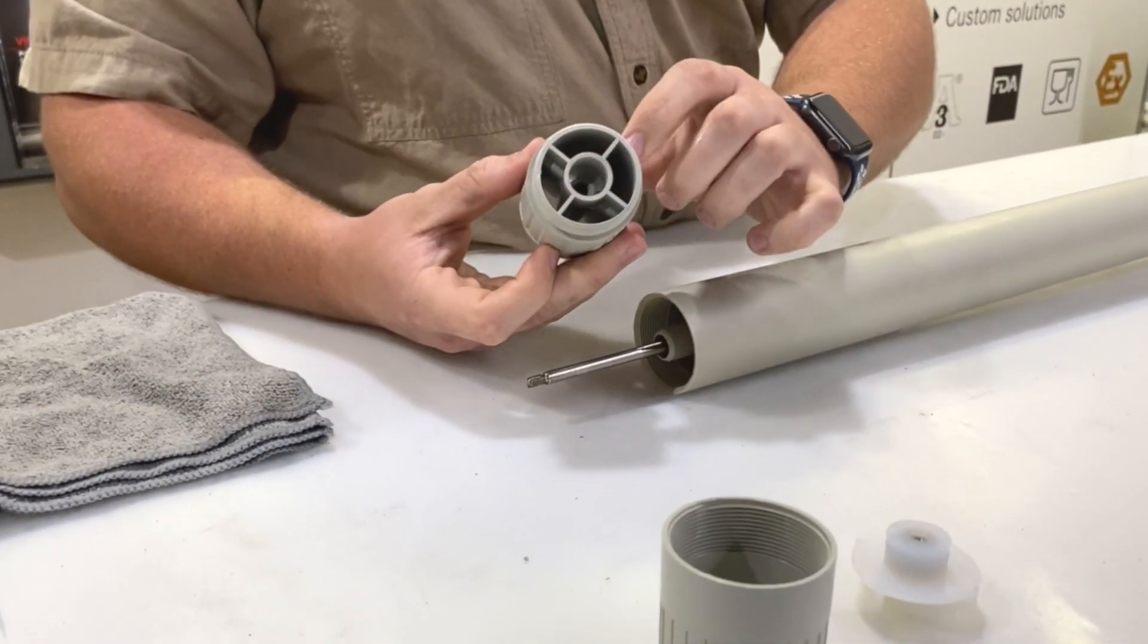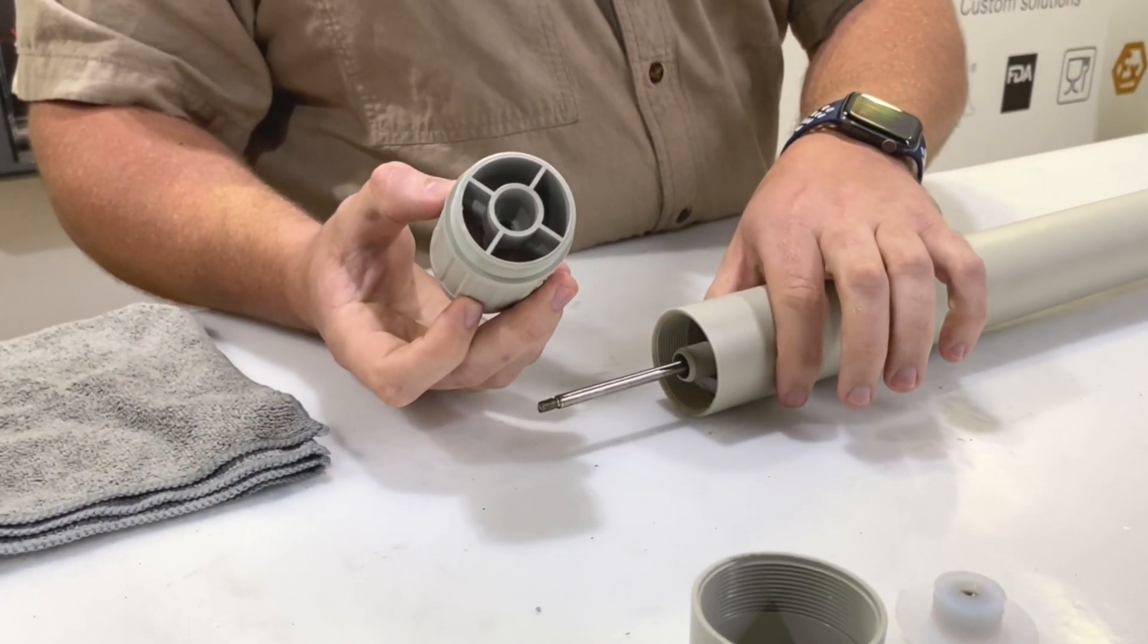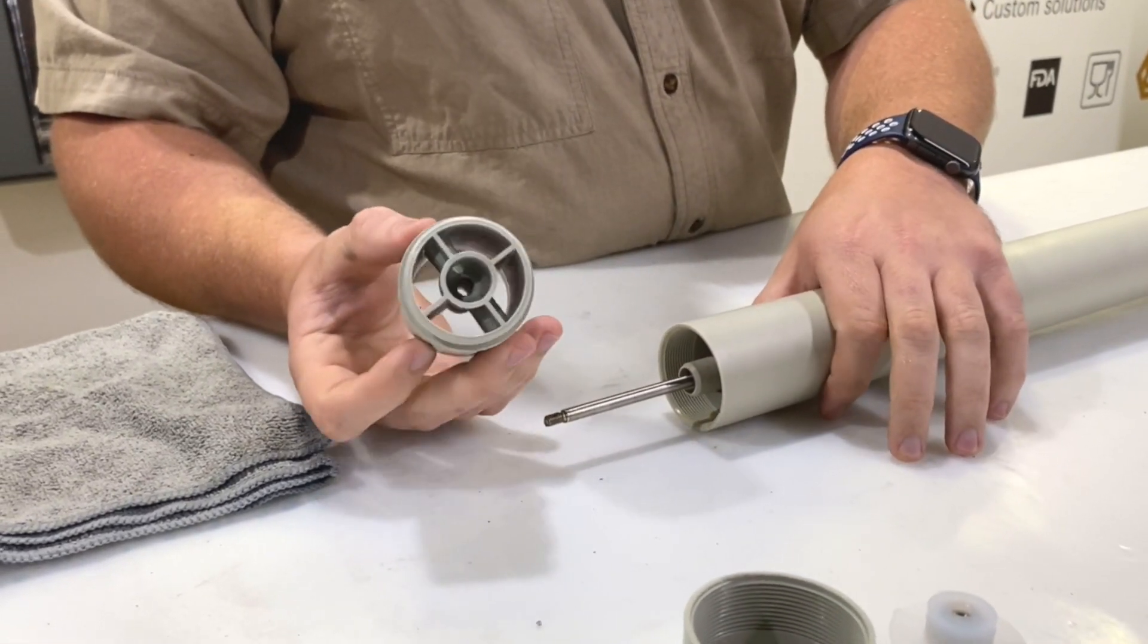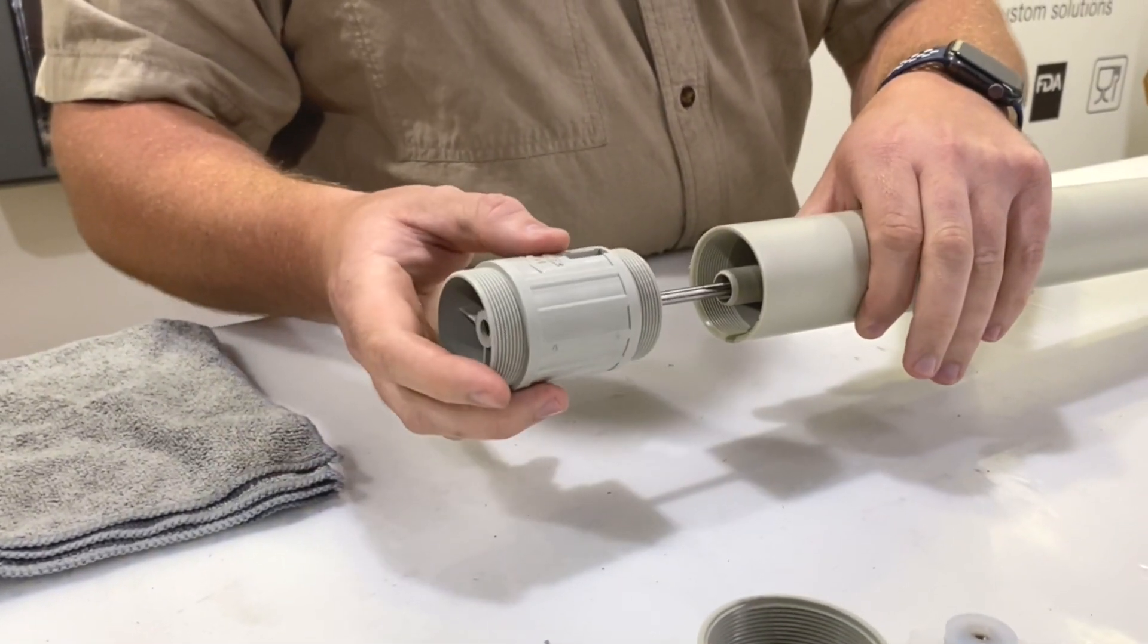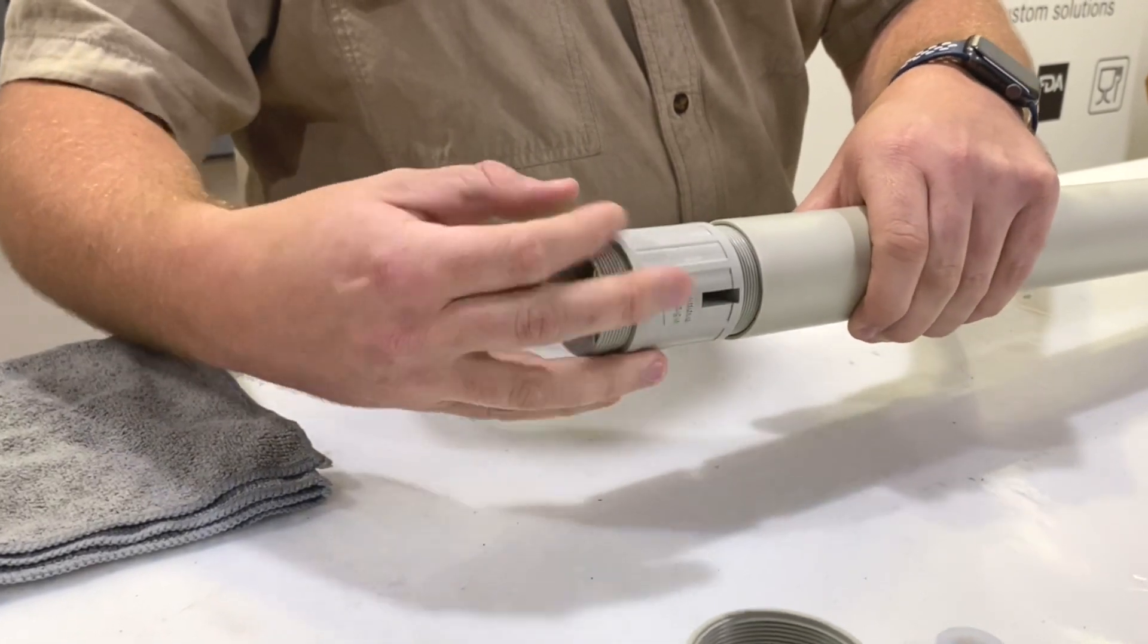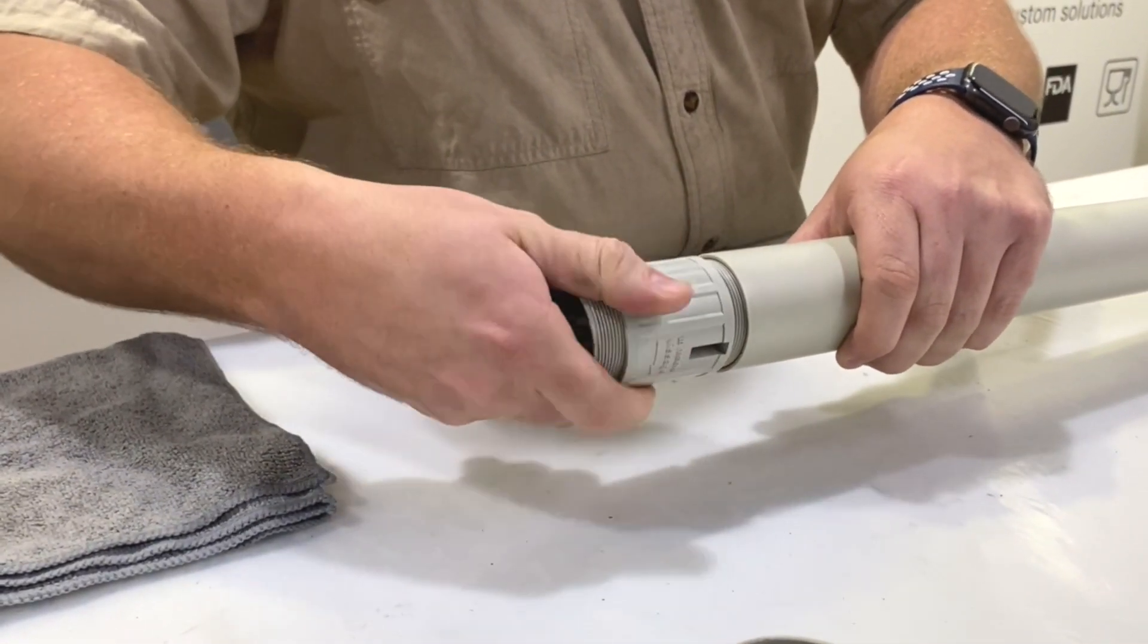And then the bearing housing, you can see it holds the shaft in the center of the tube to prevent any deflection once the pump is up to speed. Slide the shaft through there, and then screw that back into the pump tube.